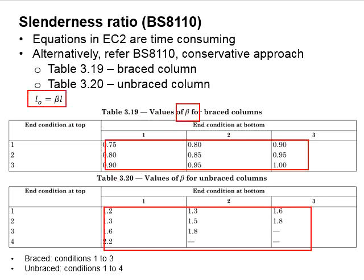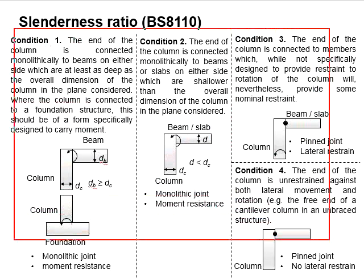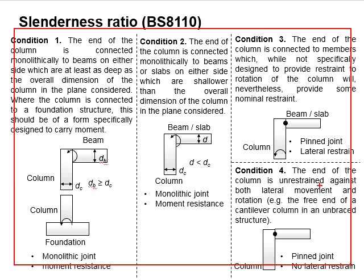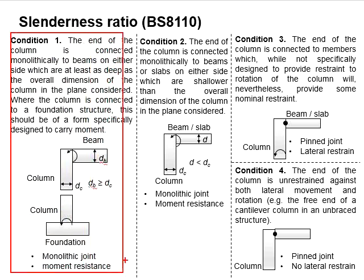This slide outlines the definition of conditions 1 to 4. Condition 1 refers to a monolithic joint, which is moment resistant, with the beam depth at least greater than the width of the column. It can be used on the connection between column and column, and also column and foundation. It represents a good rigid condition of the joint.